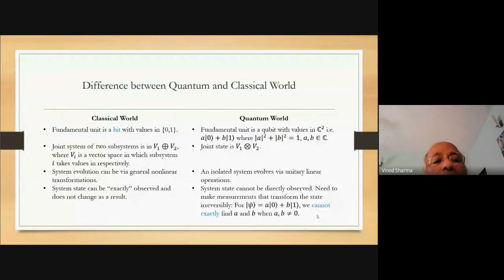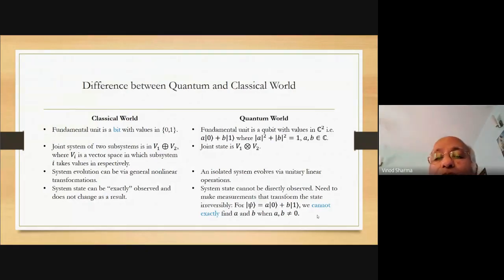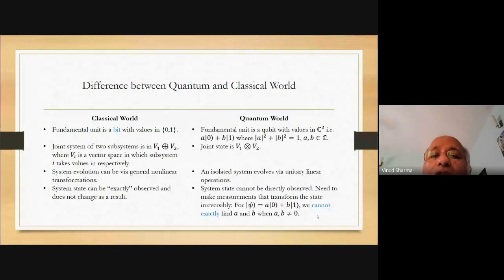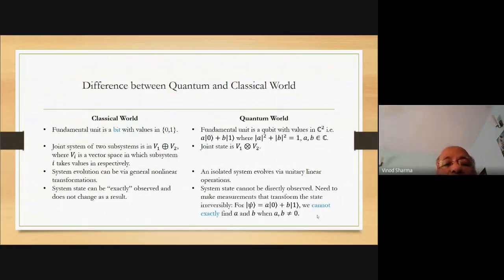In the classical world, a system can evolve in very general ways - it could be linear or a general nonlinear transformation. But in the quantum world, evolution takes place only in a linear, specifically unitary linear, form. So it's a much more restricted evolution in the quantum case than in the classical case. This may come as a surprise - quantum world is much more general than classical, yet evolves only in a unitary linear way. You can think of it analogously to a nonlinear continuous function being approximated by piecewise linear functions.